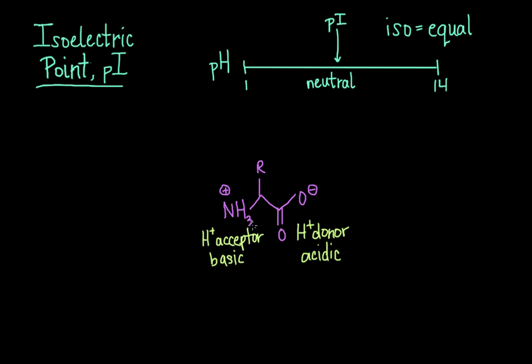And now looking at the overall net charge of our amino acid, we can see that we have a positive charge here and a negative charge here. And so the overall charge is zero. And we have a special name for when you have a molecule that has both a positive and a negative charge present. And that special word is called a zwitterion, which comes from the German word for hybrid.